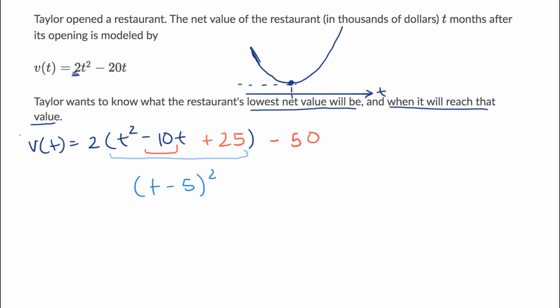When you view it that way, now V(t) = 2(t - 5)² - 50.